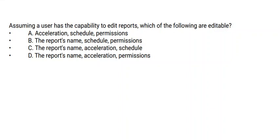Next question: assuming a user has the capability to edit reports, which of the following are editable? Option A: Selected by acceleration schedule permissions. Option B: The report's name, schedule, permissions. Option C: The report's name, acceleration, schedule. Option D: The report's name, acceleration, permissions. The correct option is option A.